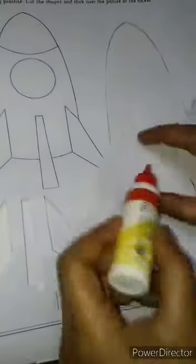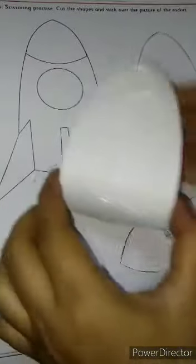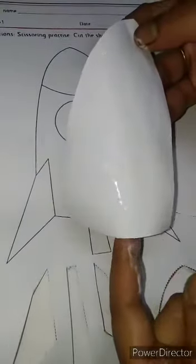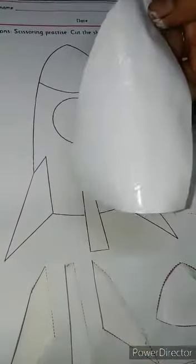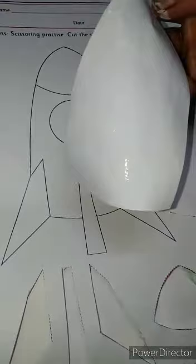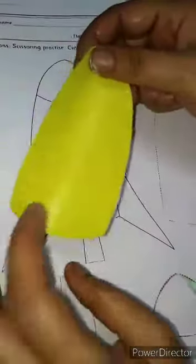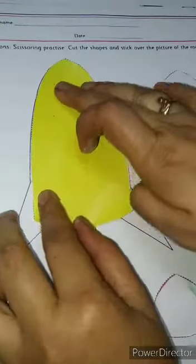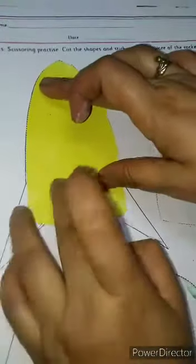But first, I will apply the glue on this part. And then after, I will stick here. Now kids, look here. I have applied the glue. Now I will stick it on the rocket. Like this.